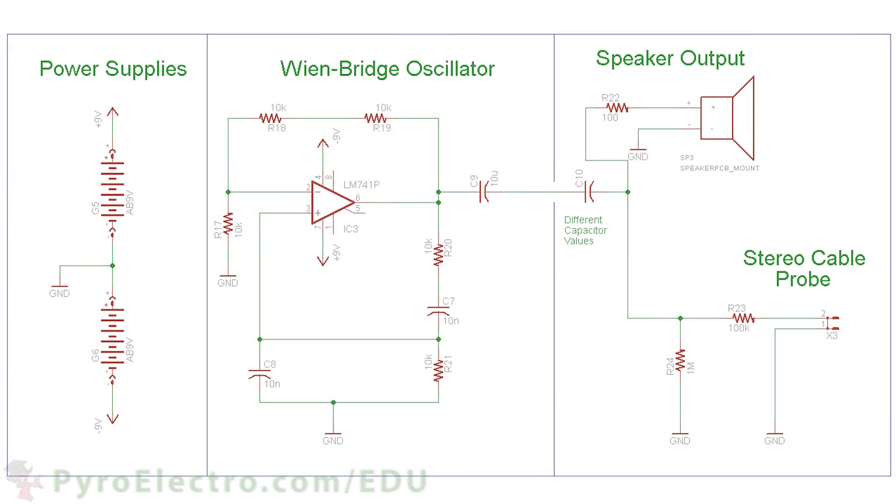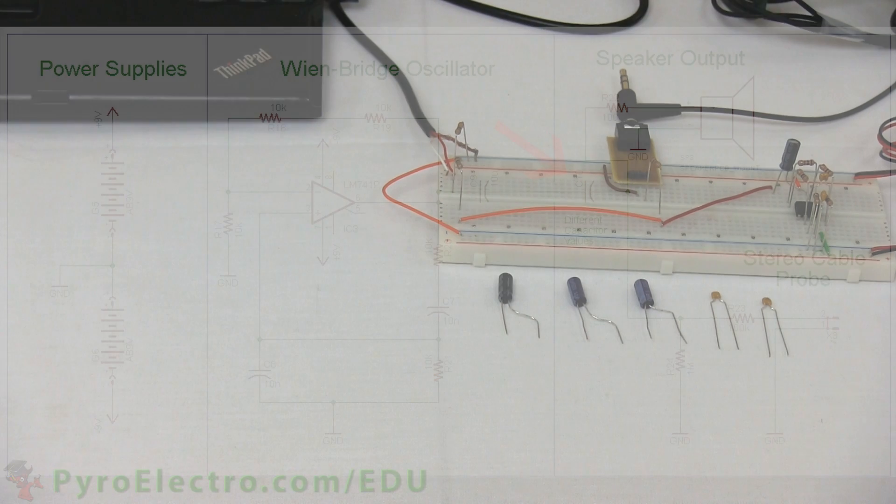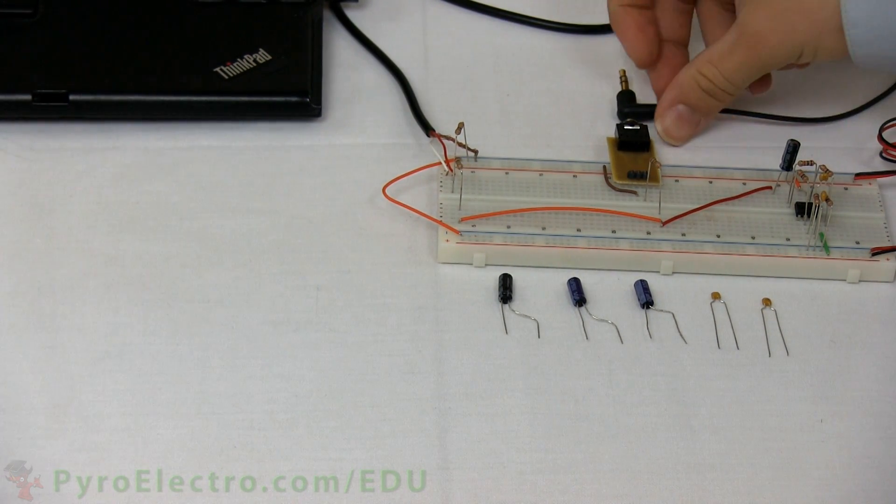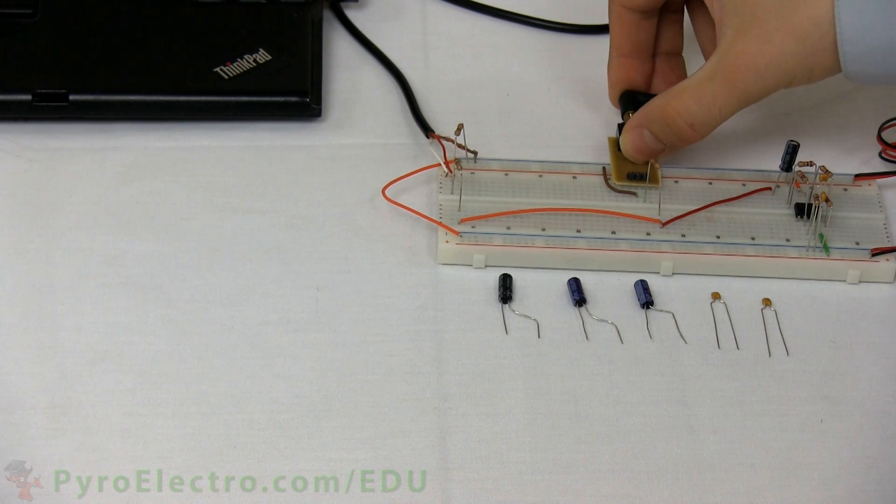And now let's turn things around and test out building some RC high-pass filters. Like we saw before, this type of filter allows higher frequencies through and filters out lower frequencies. We'll perform the same experiment as before and use each capacitor in the RC high-pass filter one by one.